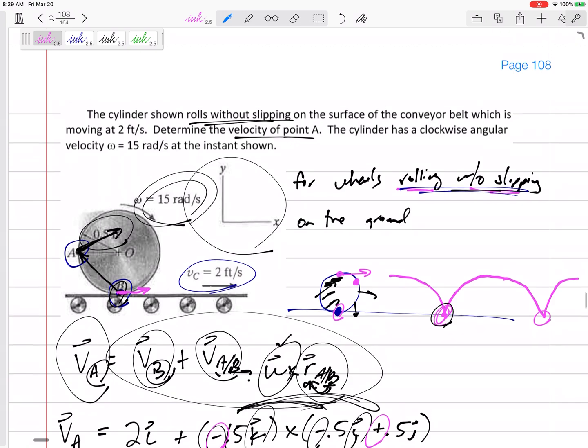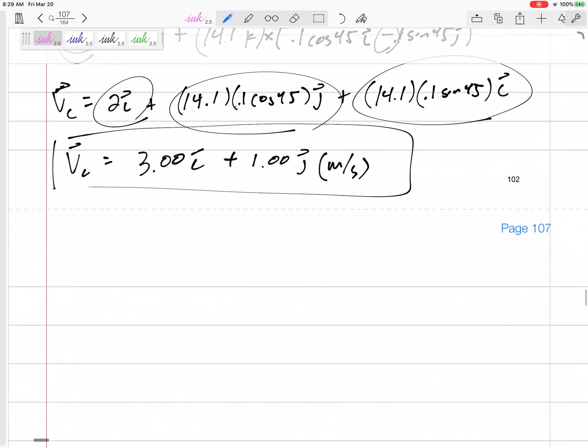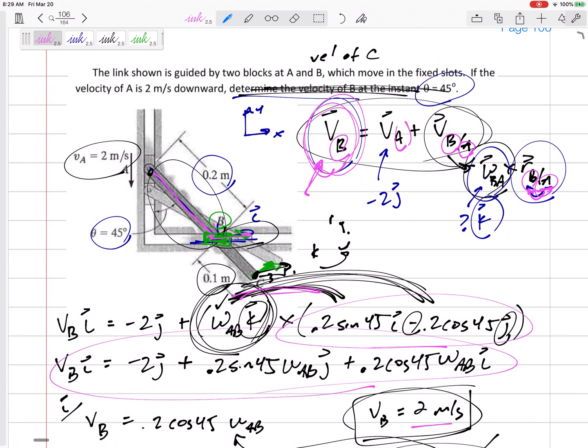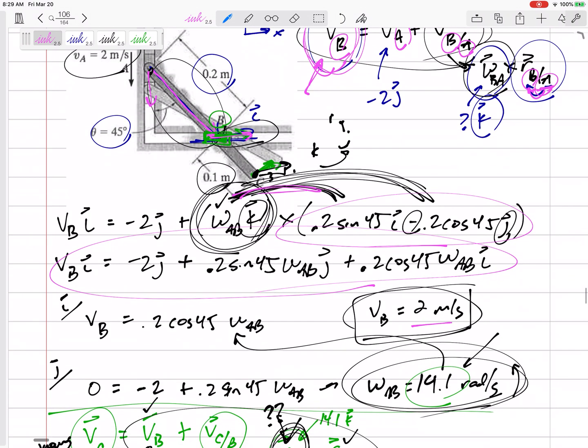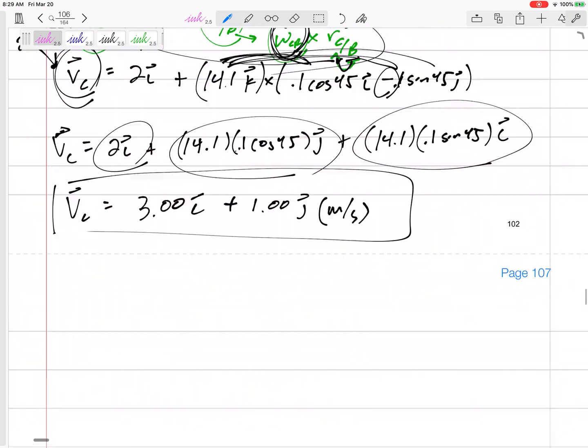And then the last one, yeah, these velocities are just controlled by slots. Sometimes velocities are controlled by slots that they're in, sometimes it's connected to a disk, sometimes it is connected to a link.